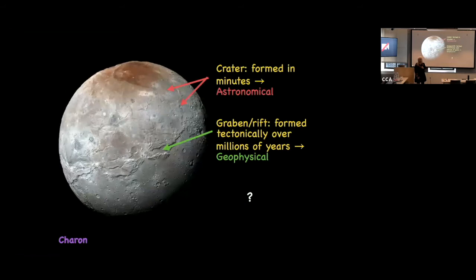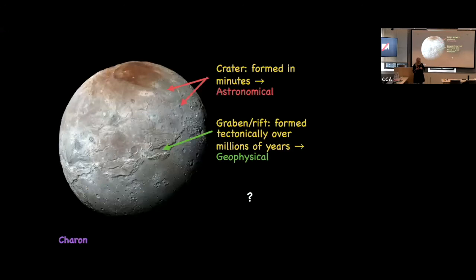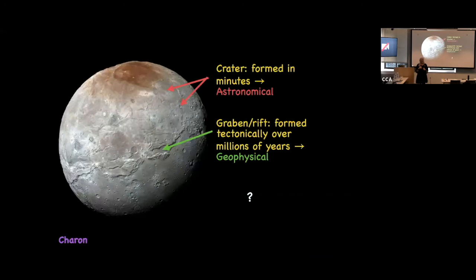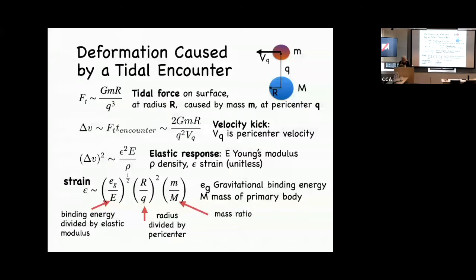One possibility: strong impacts that were catastrophic happened in the early solar system — for example, the Earth-Moon formation, where a really big body called Theia hit the proto-Earth. If there were big strong impacts in the early solar system, there were also big near-misses. A near-miss means there's a strong tidal force. Tidal forces are different from impacts because they are tensile — they pull instead of compress. When you pull something, you can make a crack.